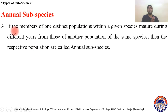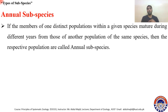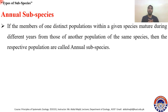Annual subspecies: if members of one distinct population within a given area mature at different years from those of another population of the same species, the respective populations are called annual subspecies. The mature forms are not present in the same year — one matures in one year and another in a different year — so they cannot coexist or interbreed.